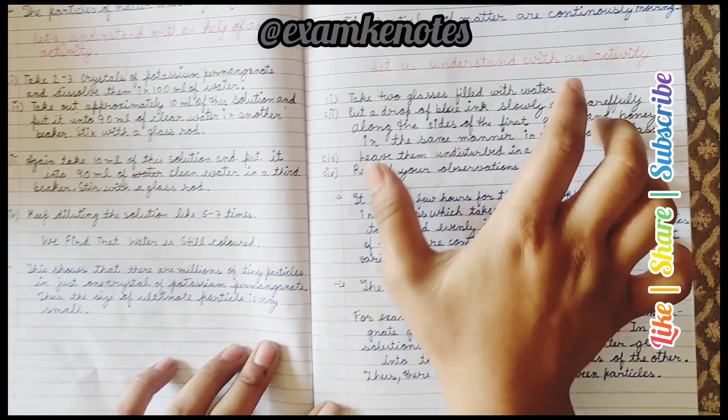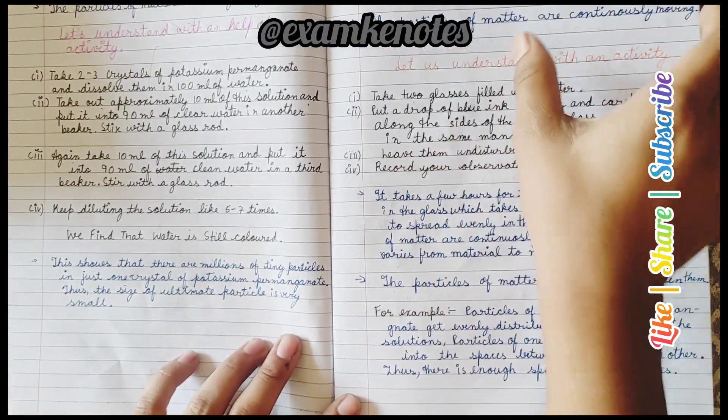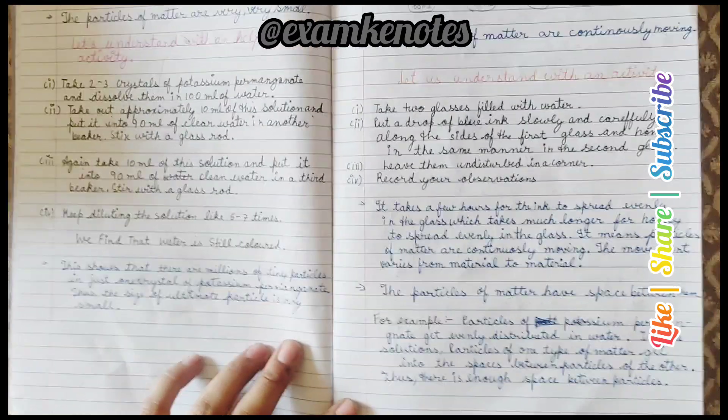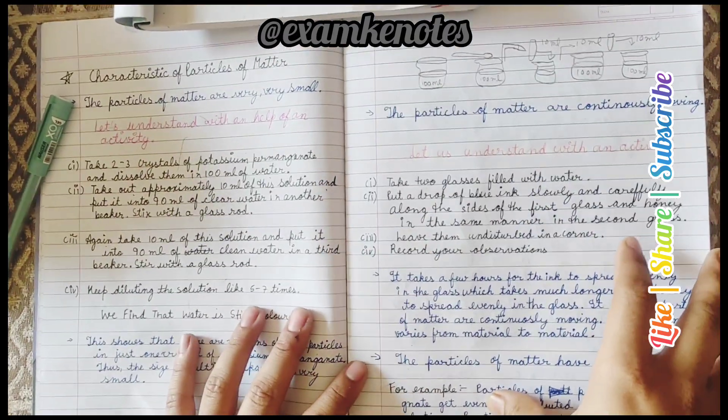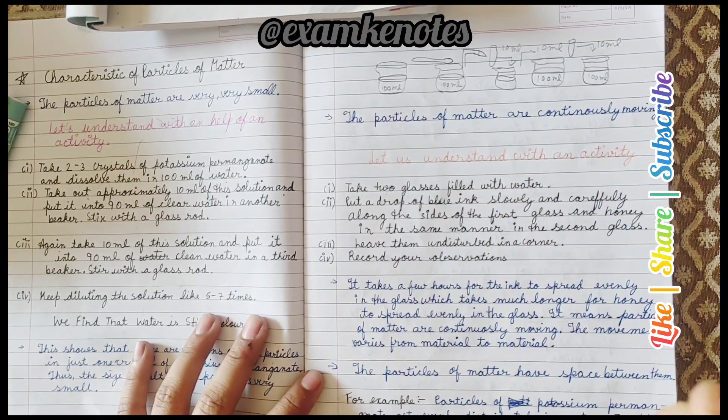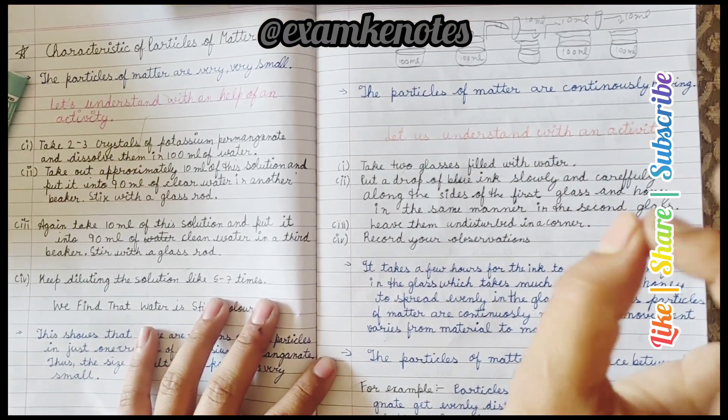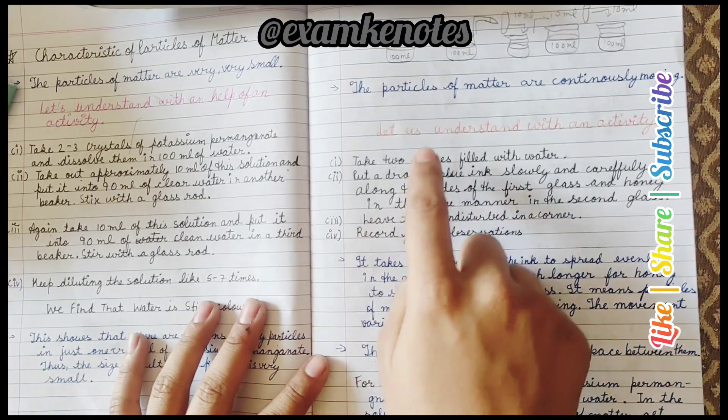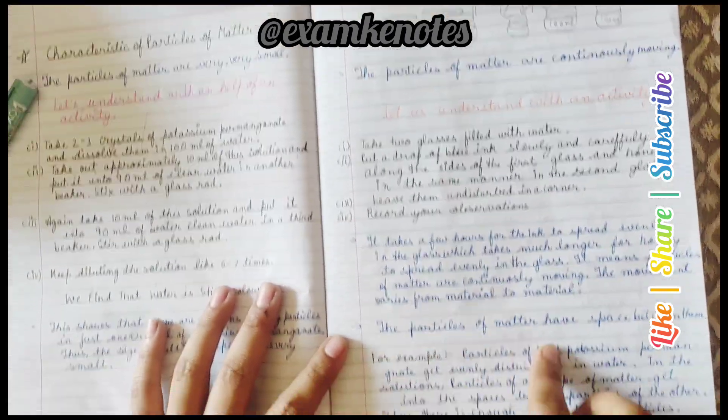For example, why are particles continuously moving? Because the particles are very, very small. We were discussing why particles are small - because they are so small, they dissolve in water. They are continuously moving, and they have space between them.